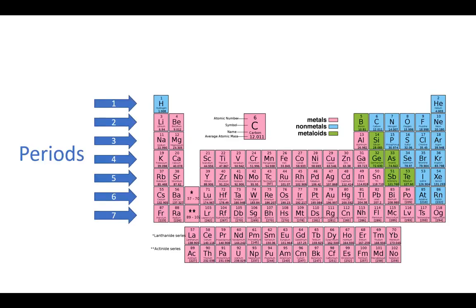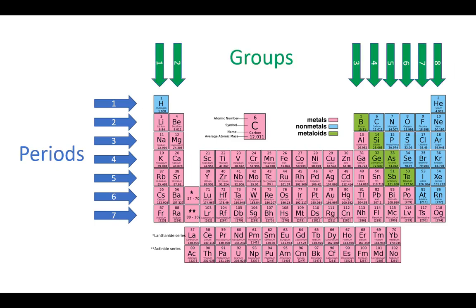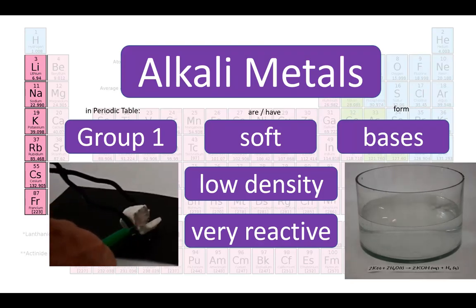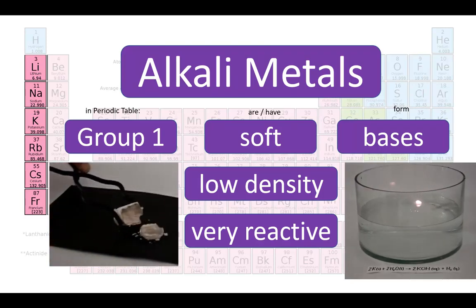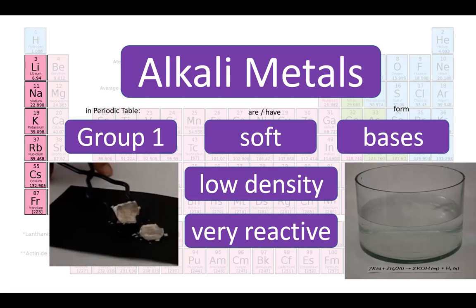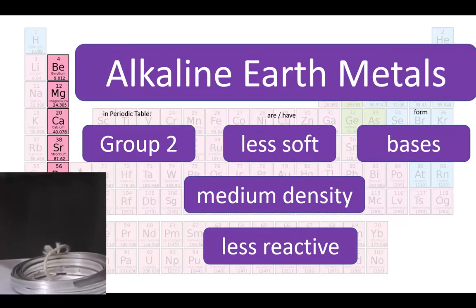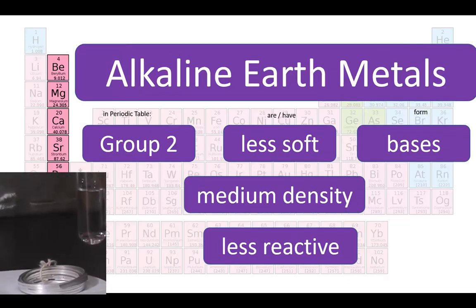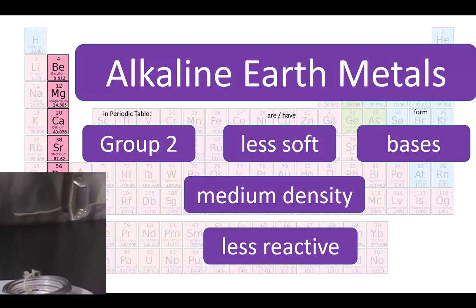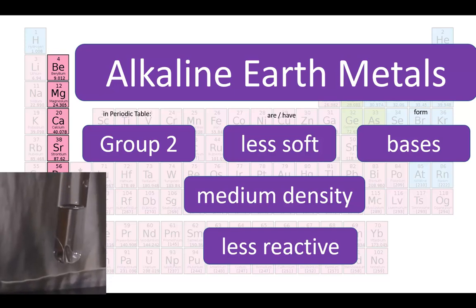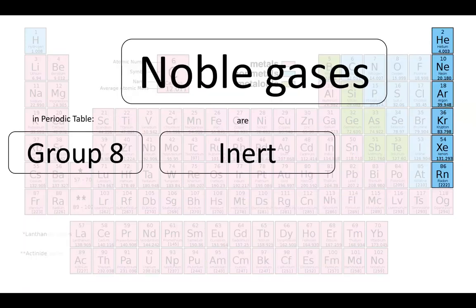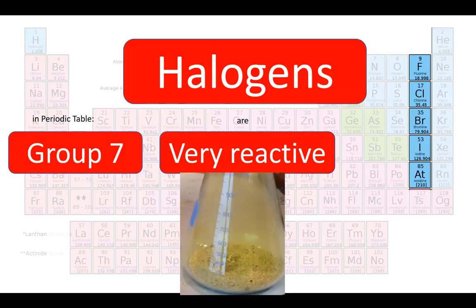Rows are called periods. Columns are called groups. Some important groups are Group 1, the soft, low-density and very reactive alkali metals; Group 2, the harder, more dense and less reactive alkaline earth metals; Group 8, the inert noble gases; and Group 7, the reactive non-metal halogens.